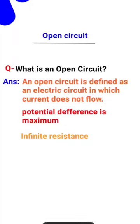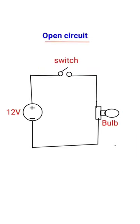Open circuit question: What is an open circuit? Answer: An open circuit is defined as an electric circuit in which current does not flow. In any circuit, the current will not flow at the open-circuited position. The potential difference is maximum, and we consider the resistance as infinity.